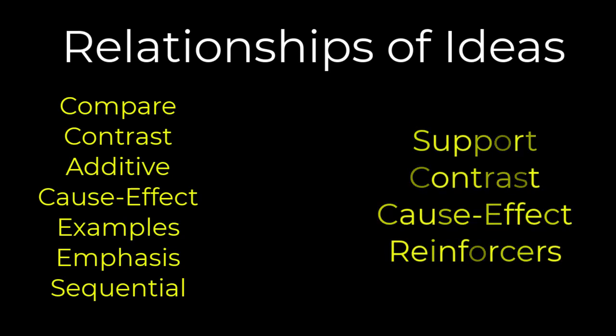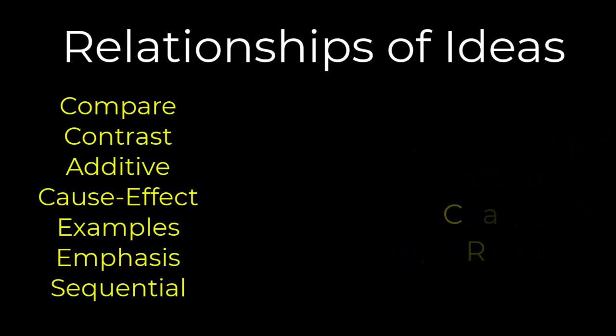Whether you organize it into six or eight groups, I don't think that's the important point. The key is to know that there are these core relationships of ideas, recognize them from the text, and then find the appropriate transition word — that's how we're going to solve these questions. These questions move pretty quickly, unlike paired passages, command of evidence, or inference. Nonetheless, you still have to read all of it, assess the relationship of ideas, predict that relationship, and compare it to the answer choices.